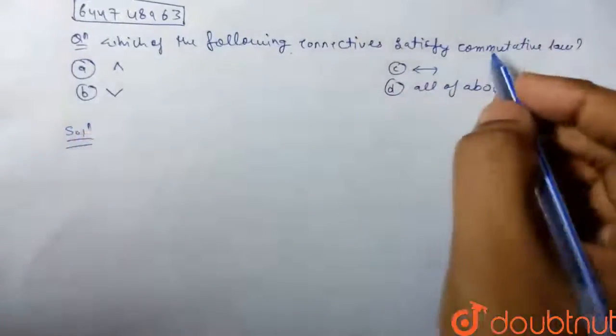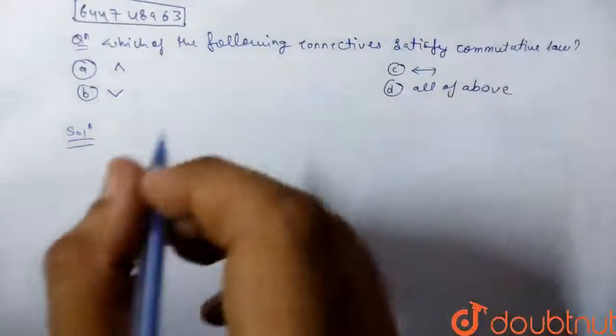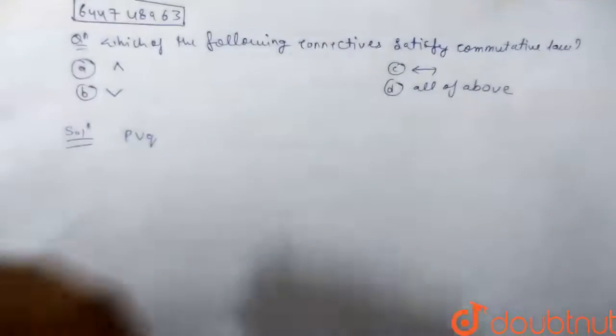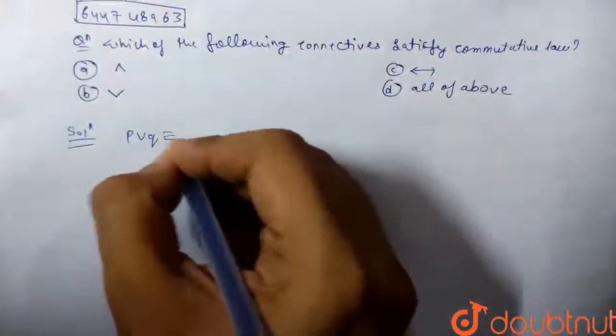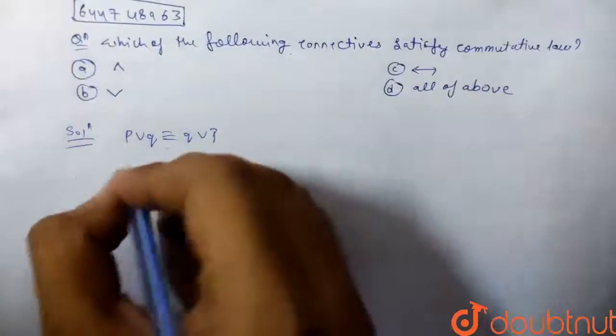For solving this question, you have to know the meaning of commutative law. The commutative law states that if p union q is also equal to q union p, and similarly,